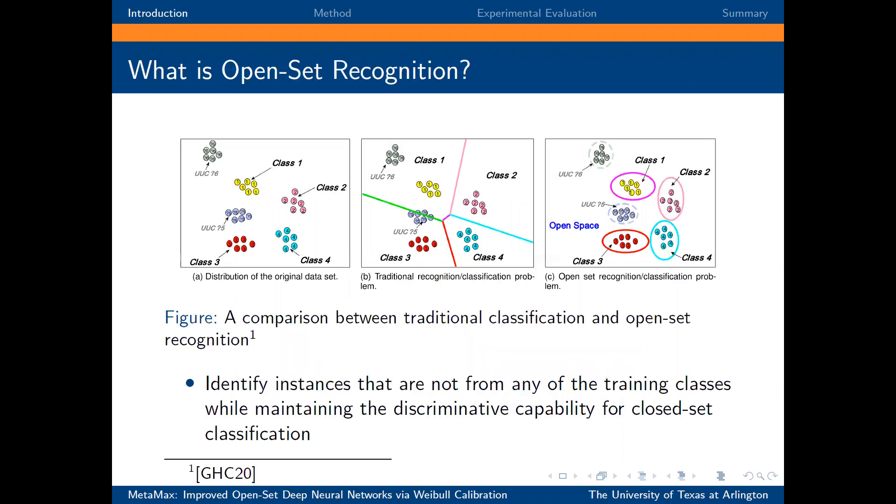In this work, we target open-set recognition, which refers to the problem where classes that were not seen during training may appear at inference time. The goal of open-set recognition is to classify instances from classes not seen during training as unknown while maintaining sufficient discriminative capability for closed-set classification.